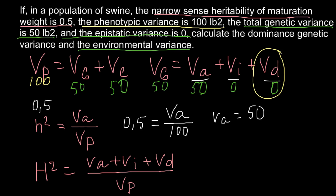So we have two answers: Variance environmental = 50, and Variance due to dominance = 0. This is very easy. For our calculations we didn't need the broad sense heritability formula — I just wanted to show you the difference between narrow sense heritability and broad sense heritability.